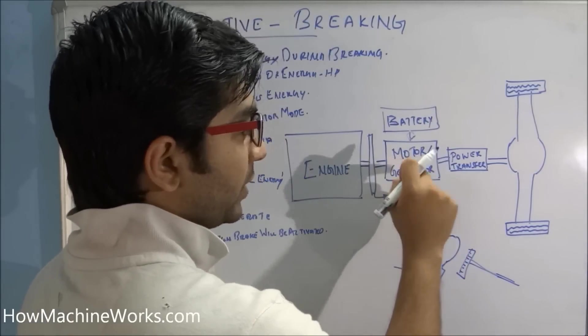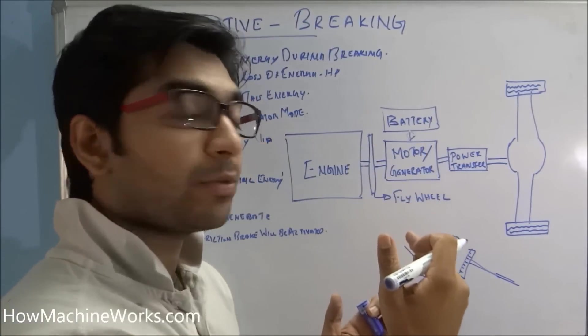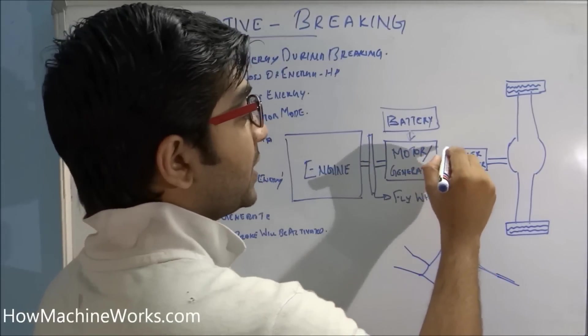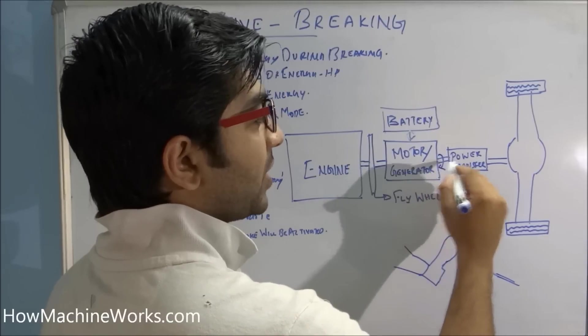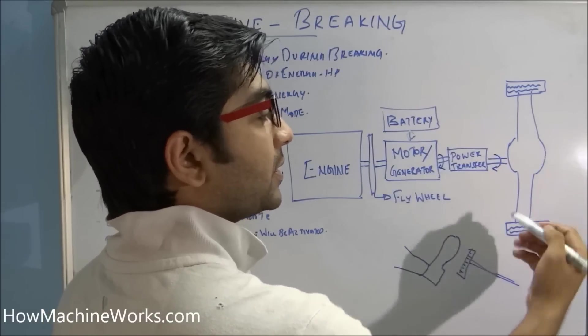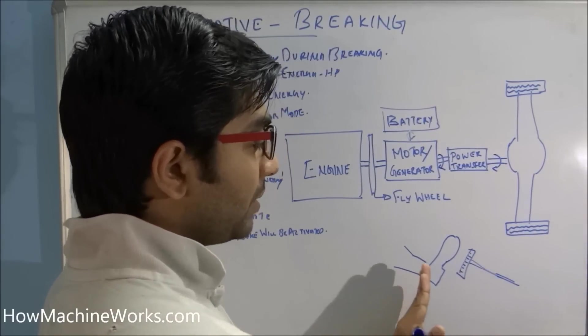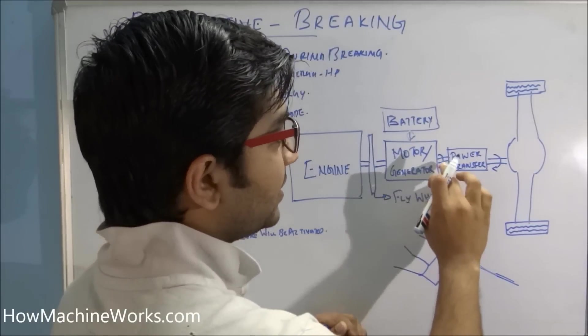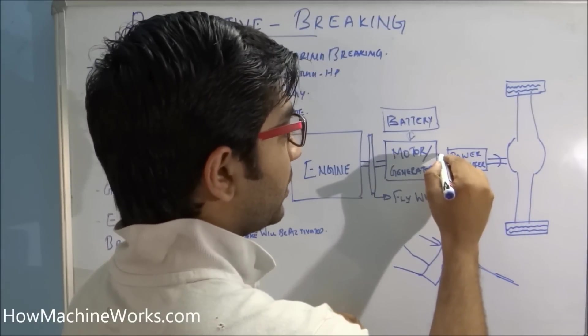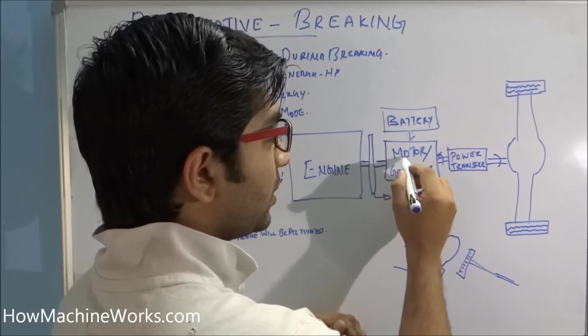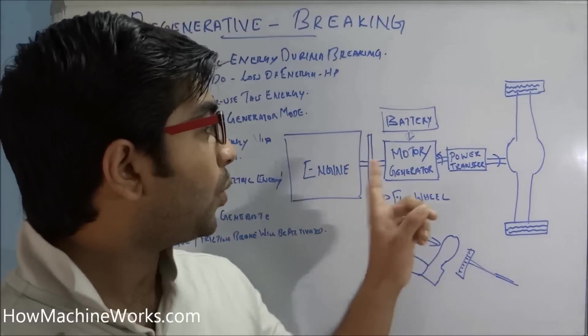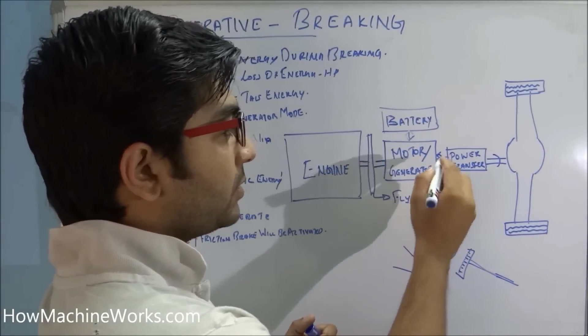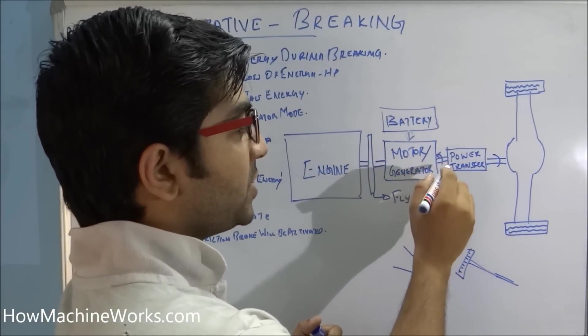This motor over here switches to generator mode. That means in normal mode when it is rotating in clockwise direction, the drive goes here and the tires are rotating. But when the brake is applied, when I step on the brake pedal, the direction of rotation changes over here. That means the motor becomes a generator. When the motor changes its direction, the direction of rotation changes.